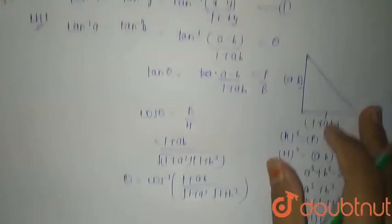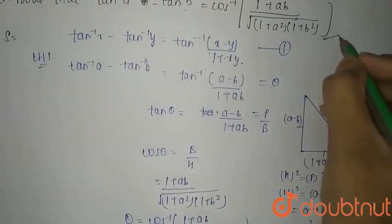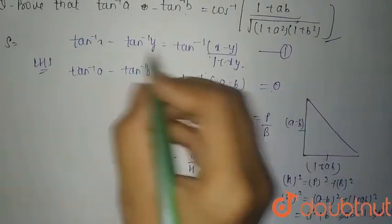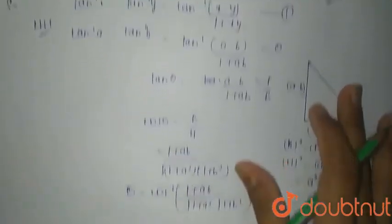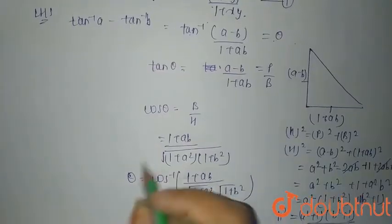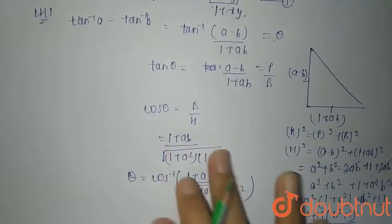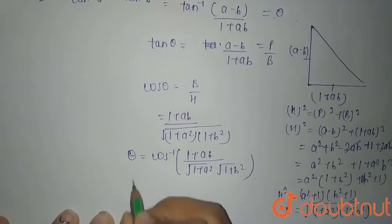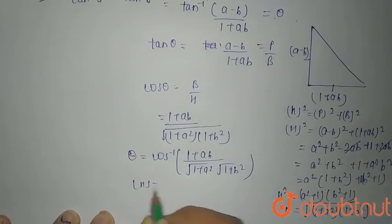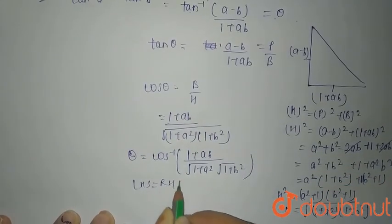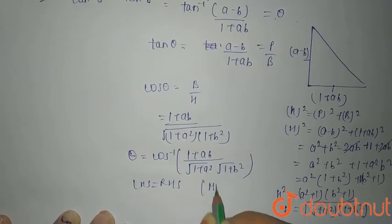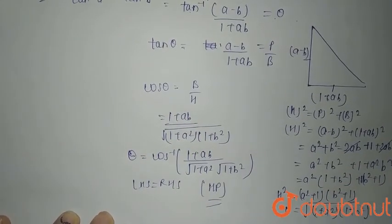Therefore theta equals cos inverse of (1 plus ab) divided by root of (1 plus a squared)(1 plus b squared), which is the RHS. Since LHS equals theta and RHS equals theta, LHS equals RHS. Hence proved. Thank you.